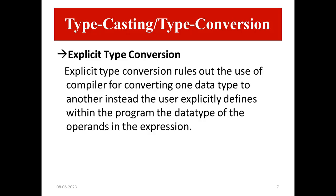Next is explicit type conversion. Explicit type conversion rules out the use of the compiler for converting one data type to another. Instead, the user explicitly defines within the program the data types of the operands in the expression. This process is not like implicit type conversion in C, where the conversion of data type occurs automatically. In case of explicit type casting, the programmer needs to force the conversion — in simple words, one has to perform type casting on the data type on their own.